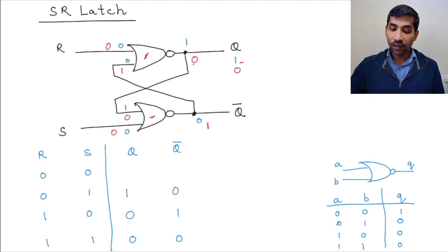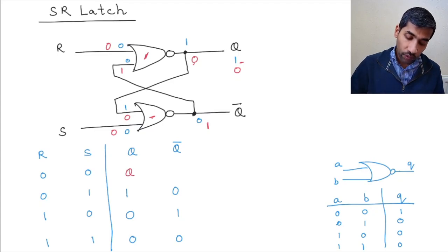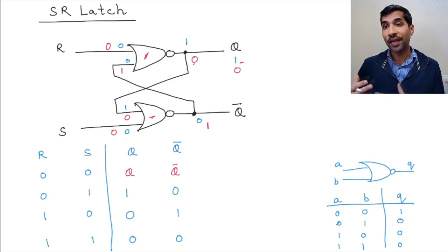And therefore, when the inputs are 0 and 0, what you get is the outputs are Q and Q bar. So basically, the previous input is maintained, and that's how this is a memory device.